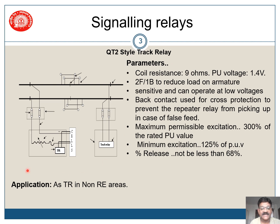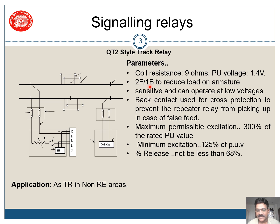The QT2 type track relay is used in tracks in an RE area. Its basic parameters: coil resistance of 9 ohms, pickup voltage of 1.4 volts. Generally it has a 2F1B configuration, which is mainly used to reduce the load on the armature. Presently we are also getting 4F2B relays. This relay is sensitive and can operate at low voltages — that is the specialty of this relay.